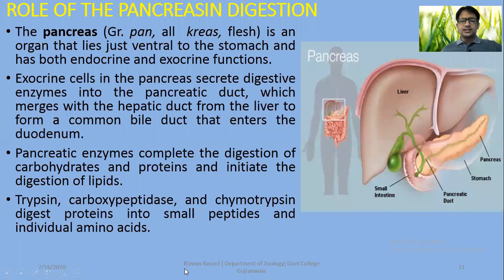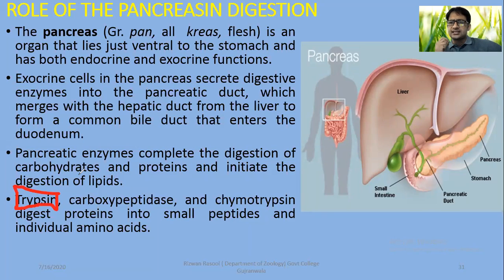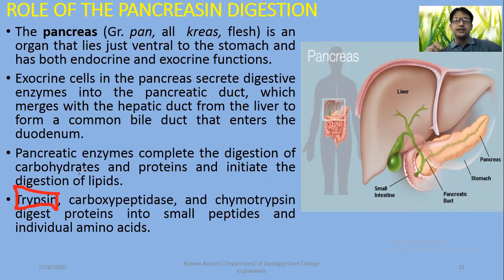Trypsin is a protein-digesting enzyme that is secreted in an inactive form called trypsinogen. An enzyme called enterokinase comes from the duodenum, which converts trypsinogen into active trypsin. Enterokinase is not a pancreatic enzyme — it is an enzyme of the duodenum.